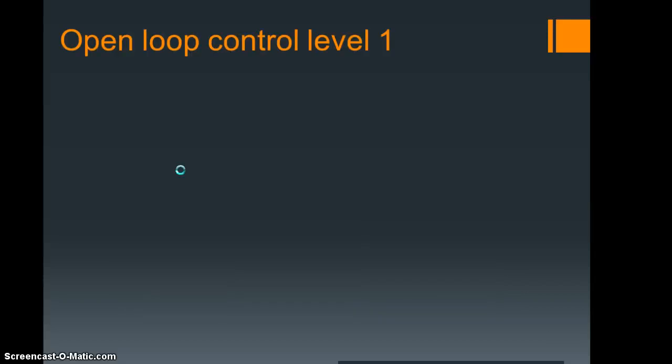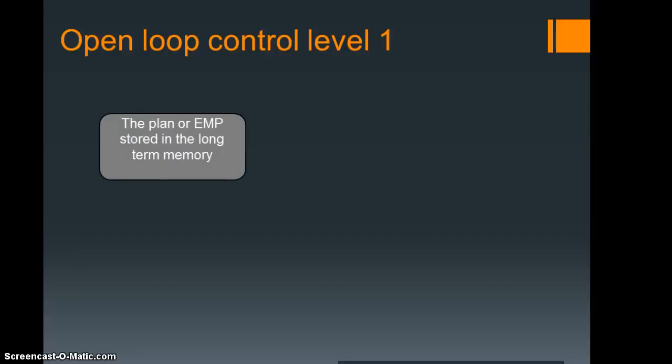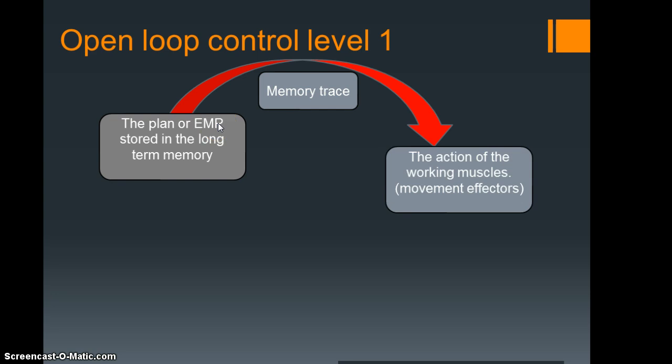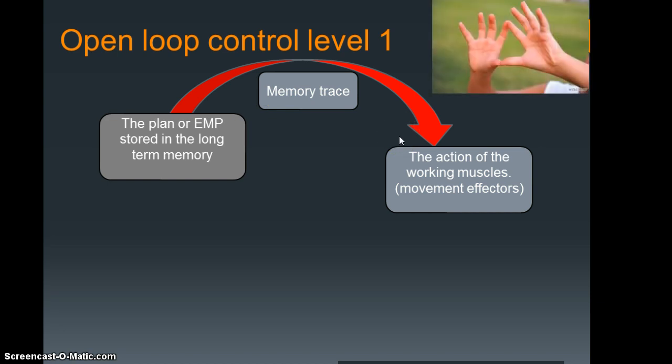Now how these are actually controlled is through different types of loop control. The first one we're going to look at is open loop control. For this one, the plan or the executive motor program is stored in long-term memory. There is then initiated a memory trace—we try and recall the information that we know as the executive motor program. And then we have an action of the working muscles. If you remember from the Welford-Whiting model, that was the movement effectors.